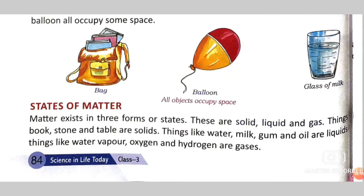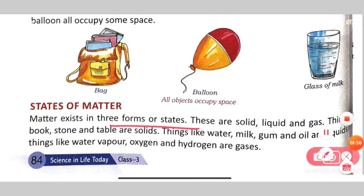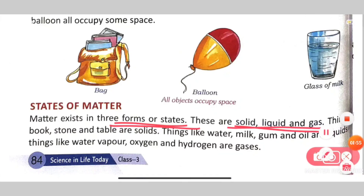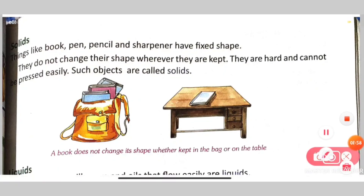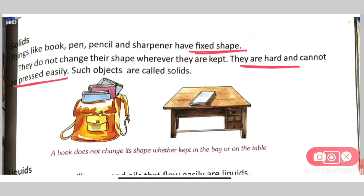We have also learnt about the three different states or forms of matter: solid, liquid, and gas. The characteristics of solids are: they have a fixed shape, they are hard, they cannot be pressed easily, and we cannot change their shape.